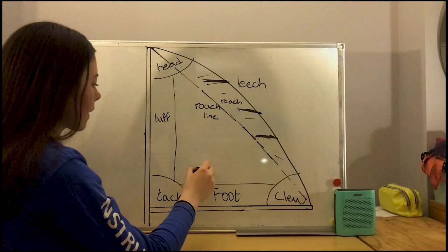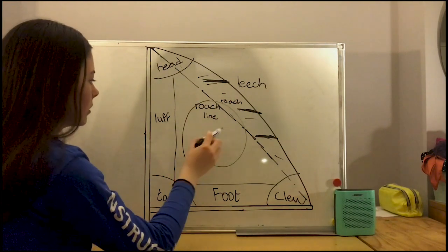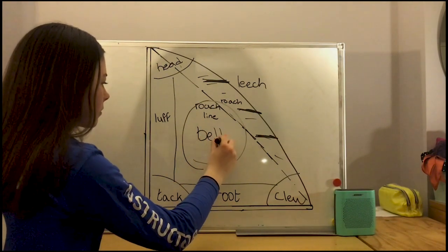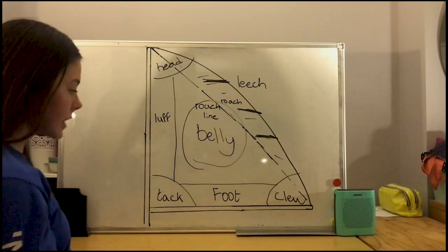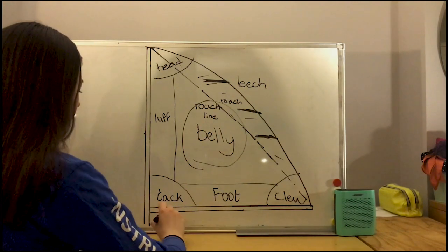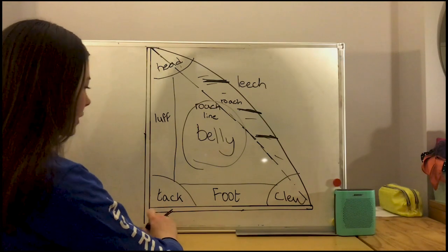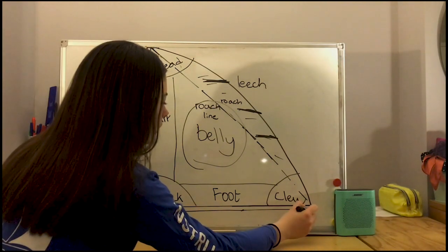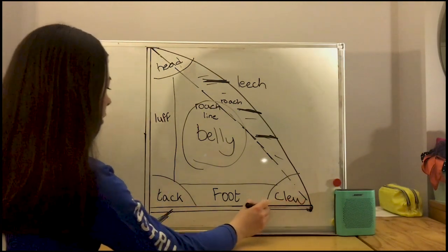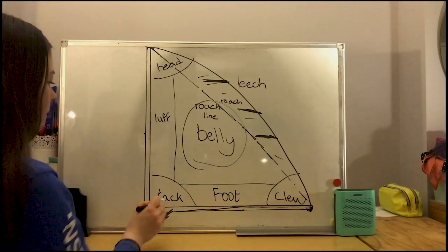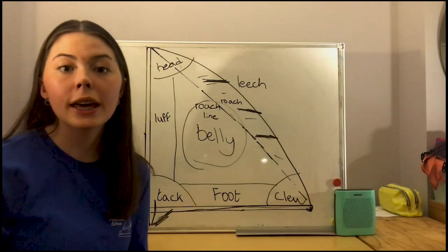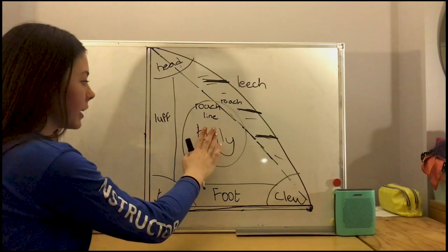And then this area in the middle of the sail, this is the belly. Now we've got lots of different sail controls. So we've got our kicker down here, our outhaul over here, running along the boom, and our downhole here. And the tighter you pull those in, the more you minimize the belly in your sail.